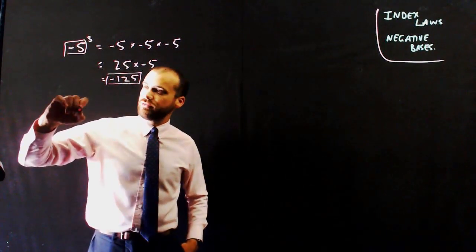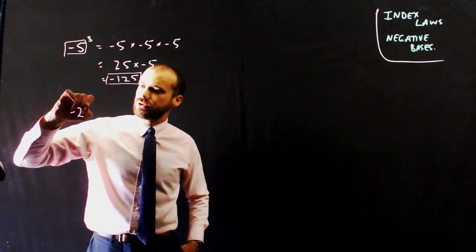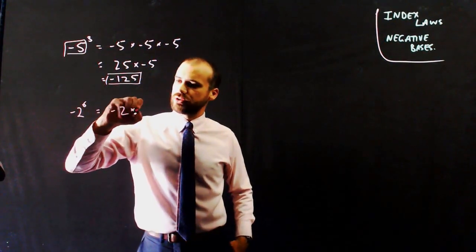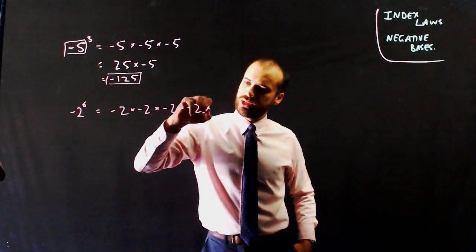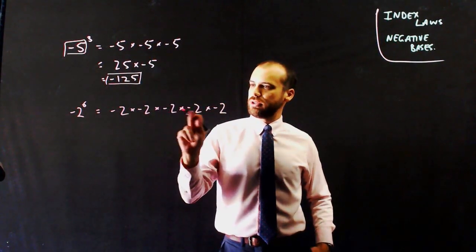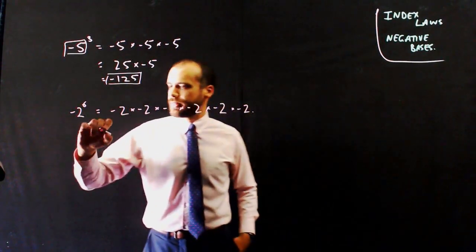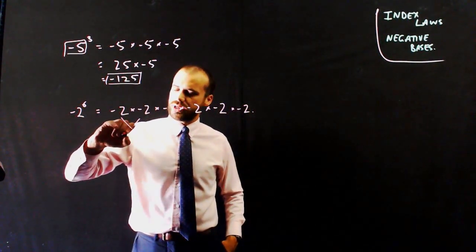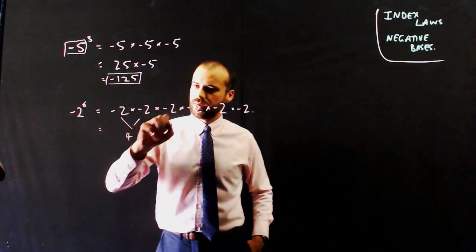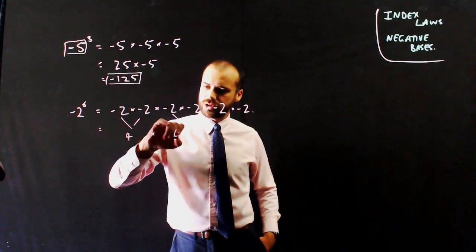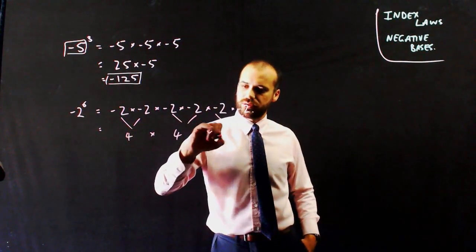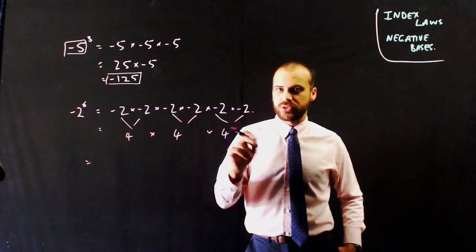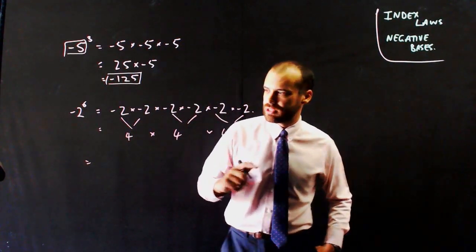If I try a different one — negative 2 to the power of 6 — that's negative 2 times negative 2 times negative 2 times negative 2 times negative 2 times negative 2. I'll do this a slightly faster way: negative 2 times negative 2 is positive 4, three times over. So 4 times 4 times 4: 4 times 4 is 16, 16 times 4 is 64.